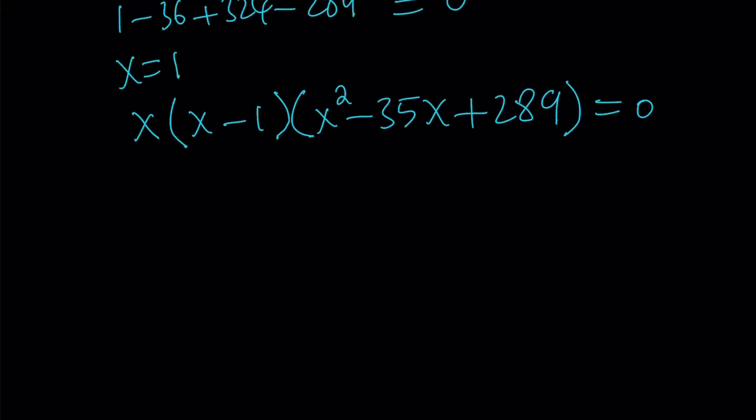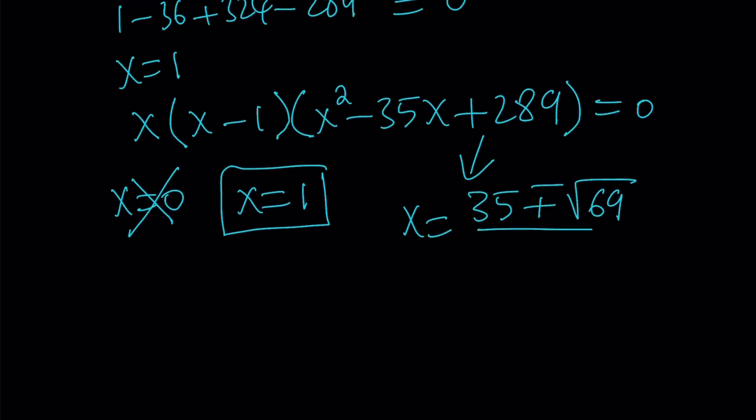Now let's go ahead and take a look at the solutions of this equation. x equals 0 is a solution, but we already considered that. x equals 1 is a solution. And this one is quadratic, so that gives us two solutions, and those solutions are x equals 35 plus minus the square root of 69 over 2.